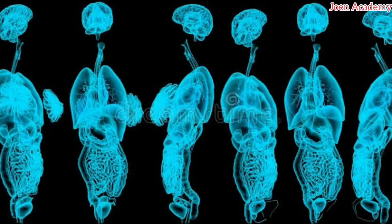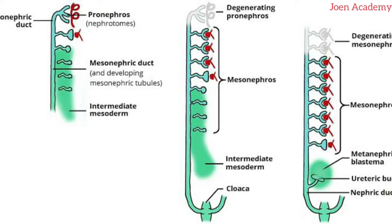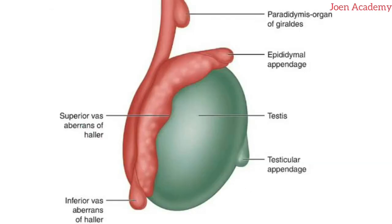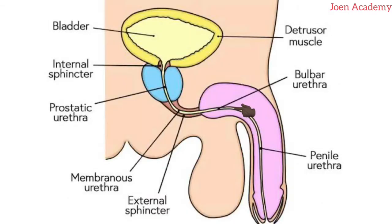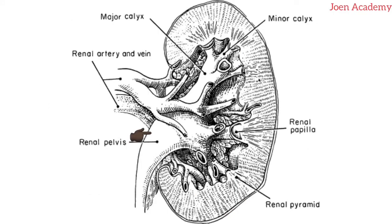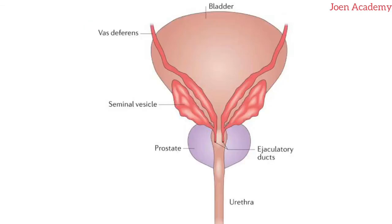The structures that the mesonephros tubules give rise to in males are the paradidymis, which is also known as the organ of Giraldes, the appendix of the epididymis, the duct of the epididymis, the ductus deferens, the urethra, the pelvicalyces, which can be referred to as the pelvis of the kidney. The collecting duct, ejaculatory duct and the seminal glands are also from these mesonephric tubules.